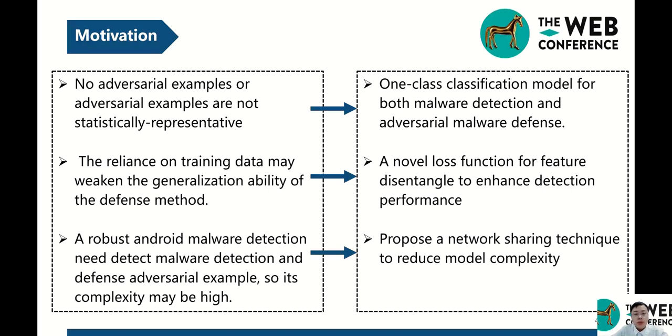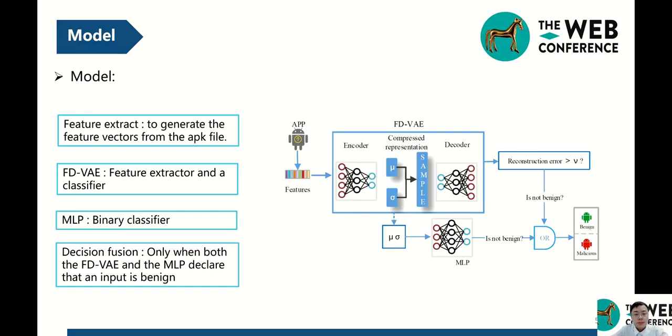To this end, we propose a one-class classification for both malware detection and adversarial malware defense, which reduces the requirement of the adversarial malware. What's more, we design a new loss function for our method to enhance detection performance. Finally, to reduce model complexity, we propose a network sharing technique. Next, we will introduce our work.